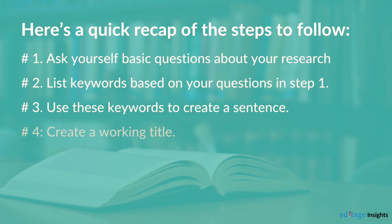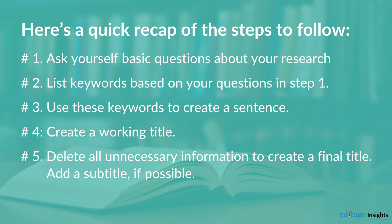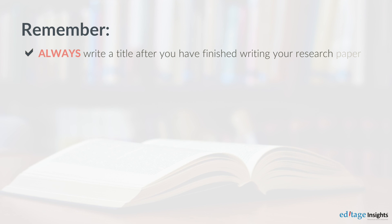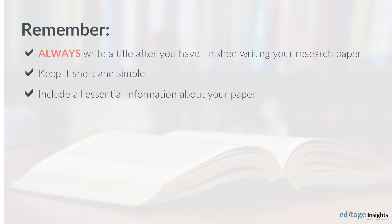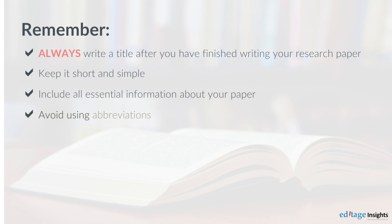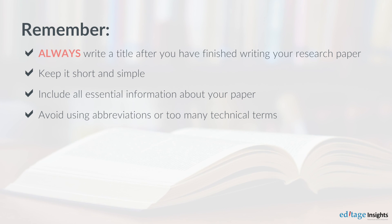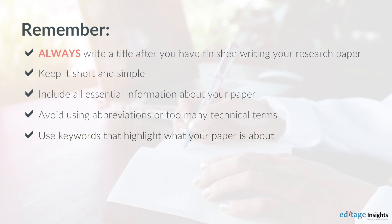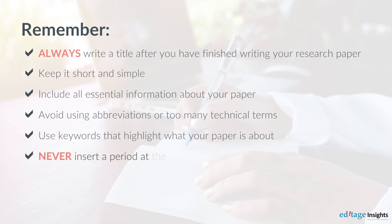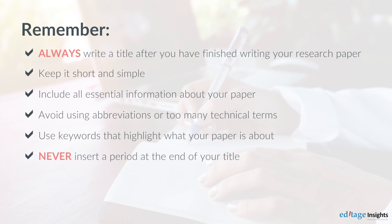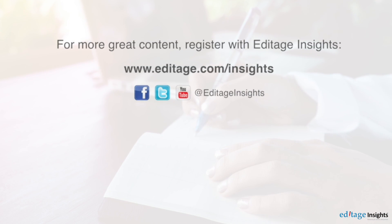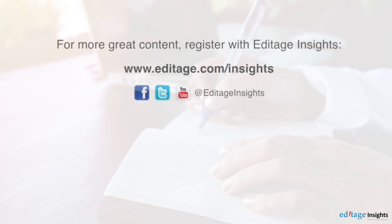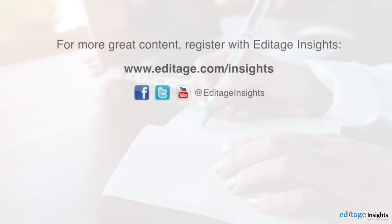Let's do a quick recap. Remember, always write a title after you've finished writing your research paper. Keep it short and simple. Include all essential information about your paper. Avoid using abbreviations or too many technical terms. Use keywords that highlight what your paper is about. Never insert a period at the end of your title. That brings us to the end of this tutorial. I hope you find these tips helpful. For more resources on writing and publishing a research paper, visit Editage Insights at www.editage.com/insights.